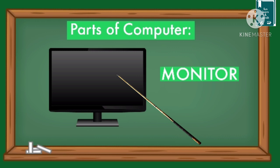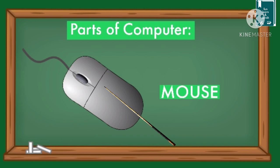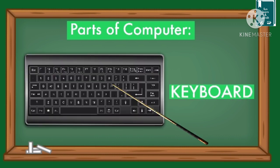This is monitor. What is this? Monitor. This is mouse. What is this? Mouse. This is keyboard. What is this? Keyboard.